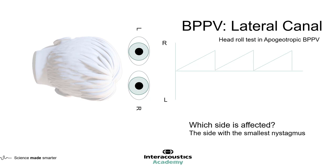This is opposite to the nystagmus seen in the geotropic form. The next question is which side is affected — is it the left ear or the right ear? In the apogeotropic form, the answer is the side which has the smallest nystagmus.